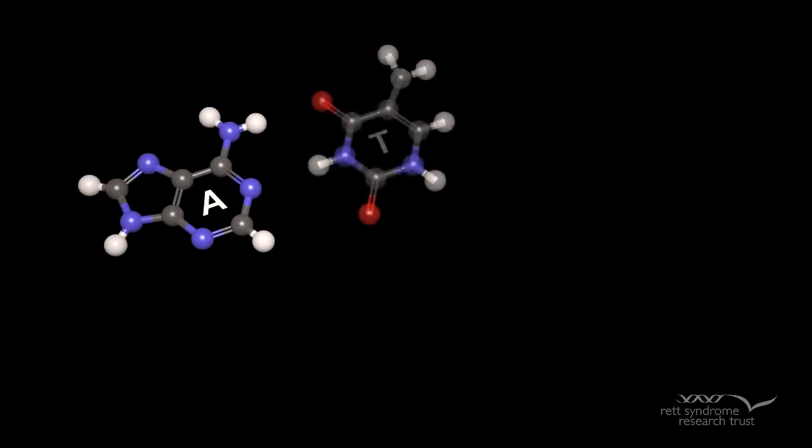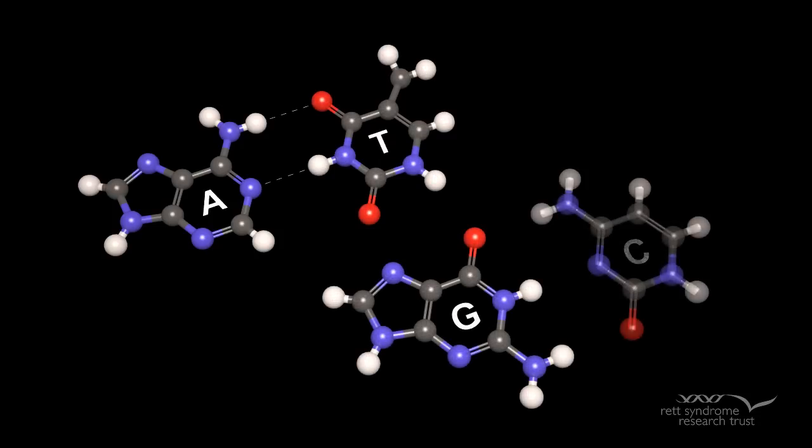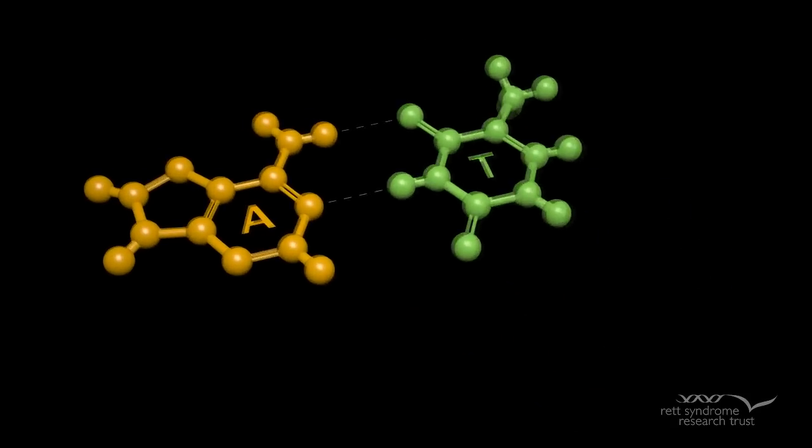Genes are made up of DNA, which is made up of bases called A, T, G, and C. A always pairs with T, and G always pairs with C.